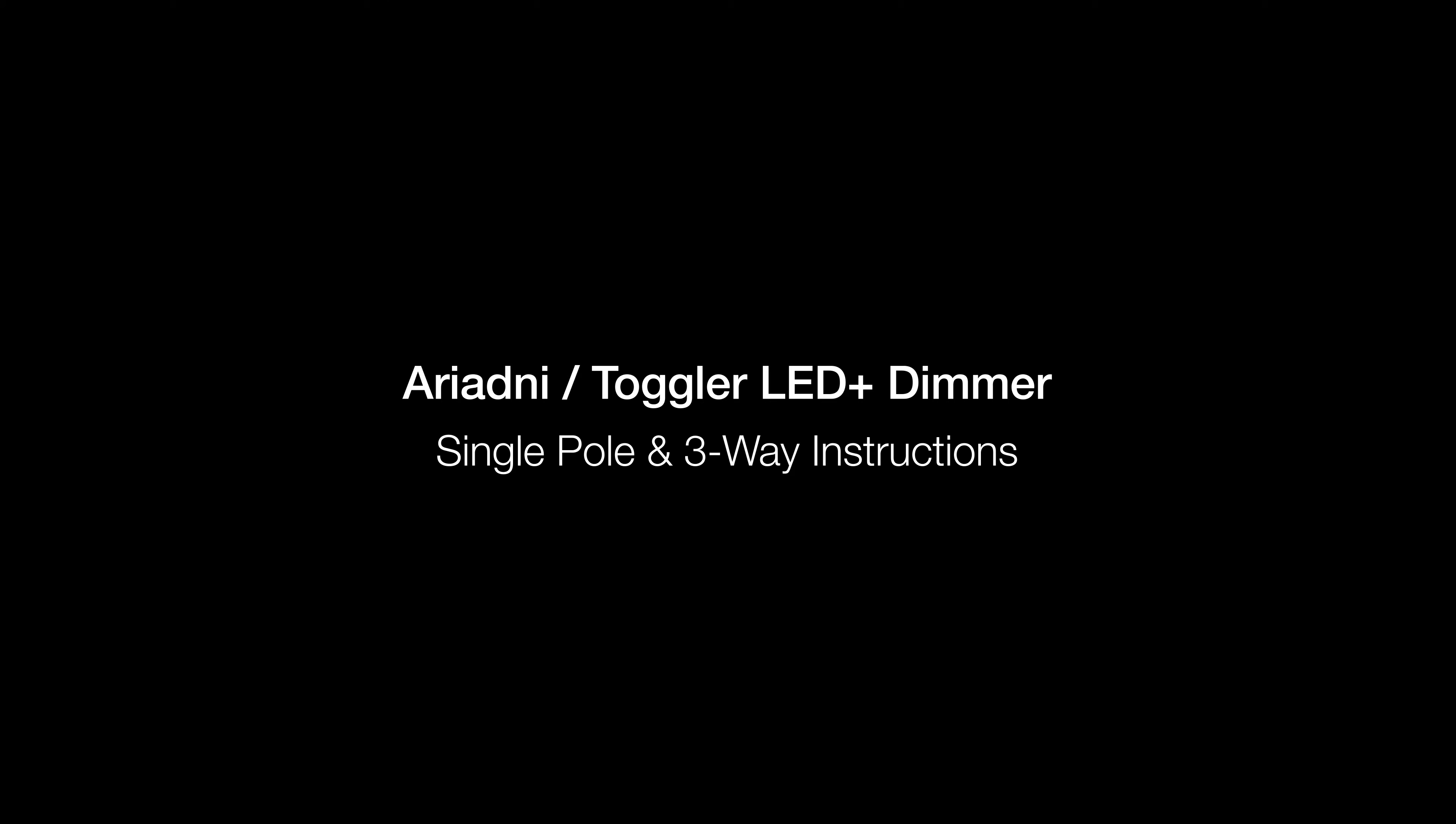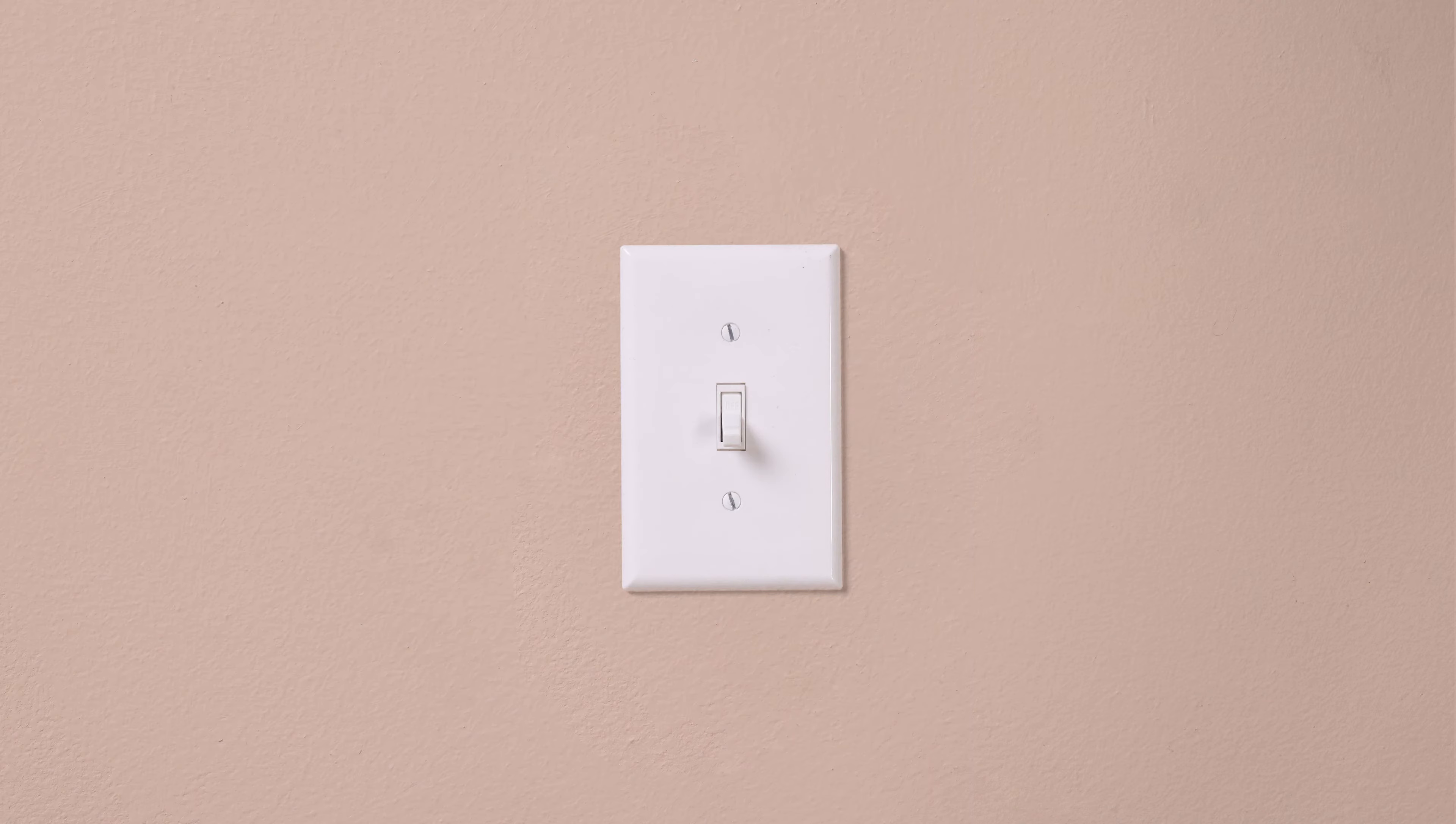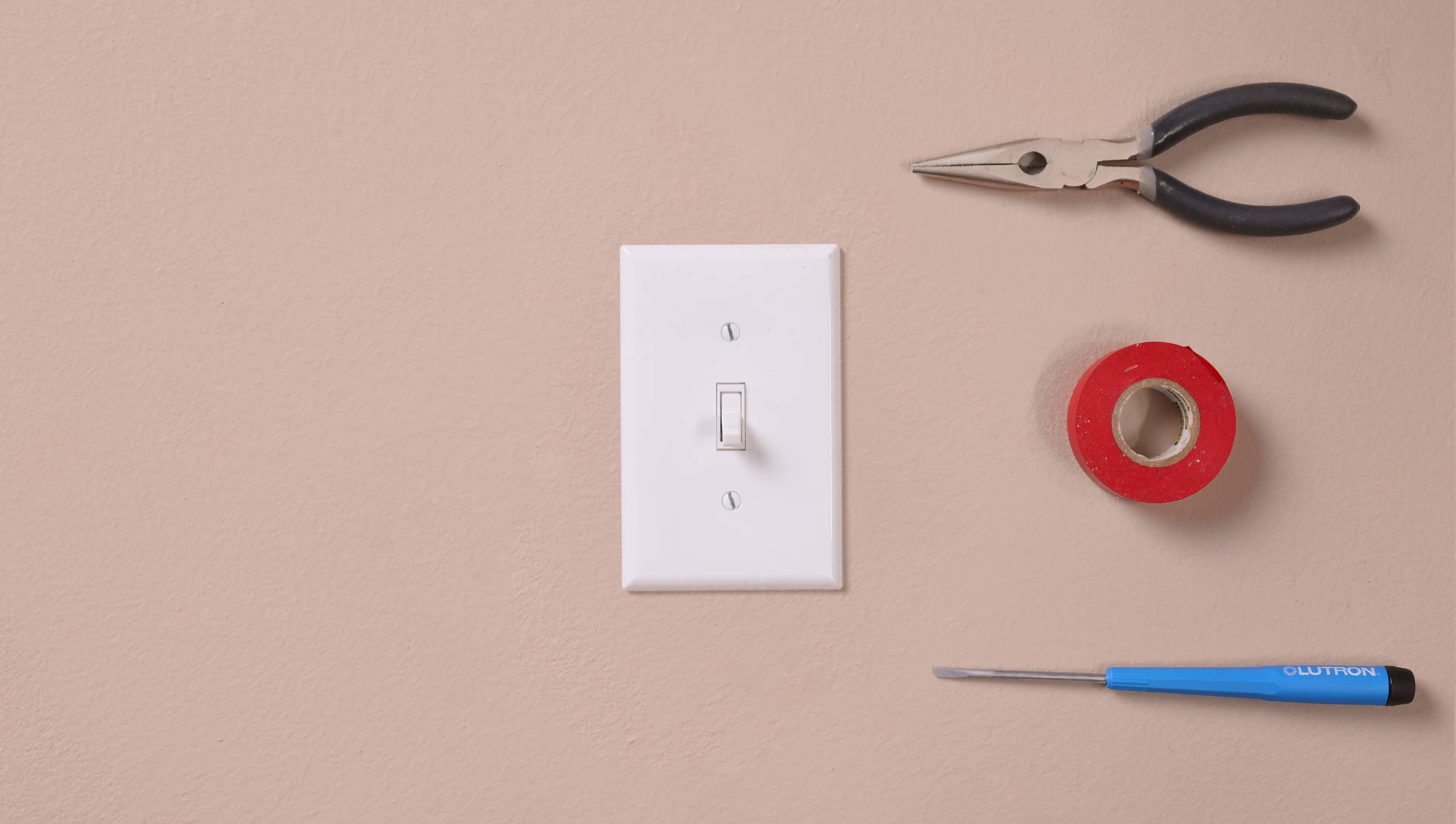Lutron dimmers can easily be installed in under 15 minutes and require only a screwdriver, a pair of pliers, and a piece of electrical tape.